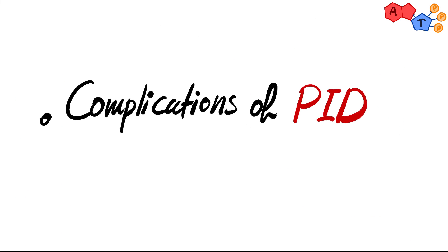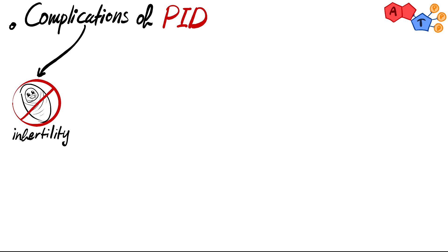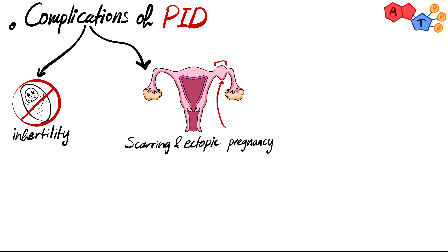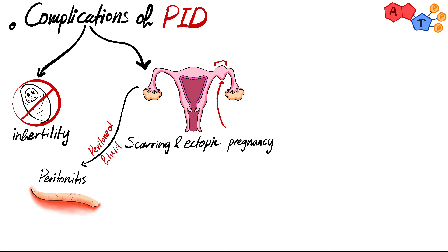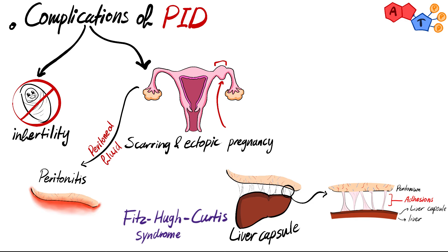Now let's focus on the possible complications of PID. First, we have infertility, which occurs when scar tissue forms in the fallopian tube, blocking it and preventing the egg from meeting the sperm. Second, scarring can lead to ectopic pregnancy — the most common site being the ampulla of the fallopian tube. Third, we have peritonitis, when the infection spreads from the fallopian tube into the peritoneal fluid. Lastly, Fitz-Hugh-Curtis syndrome occurs when the infection spreads to the liver capsule, resulting in adhesions between the liver capsule and the peritoneum, called violin string adhesions.